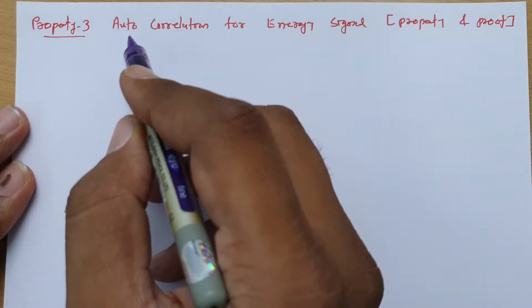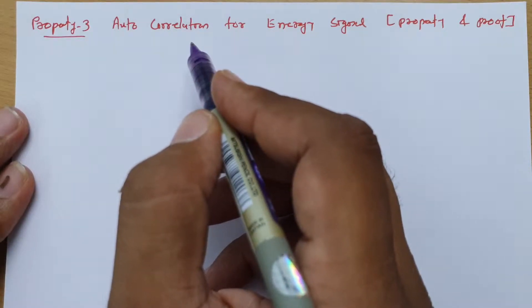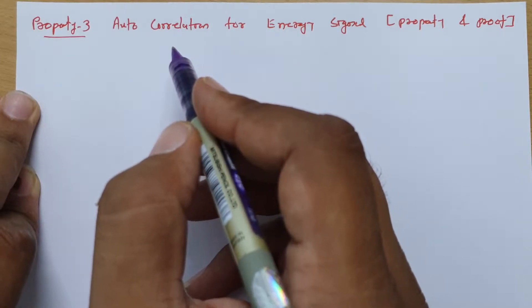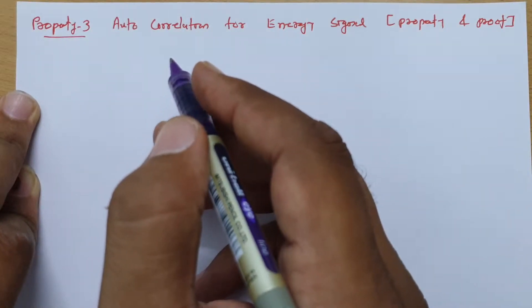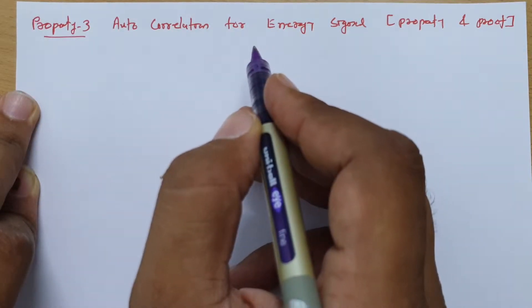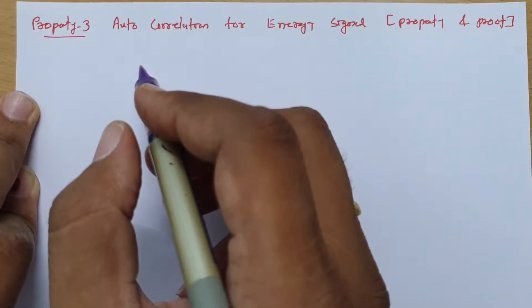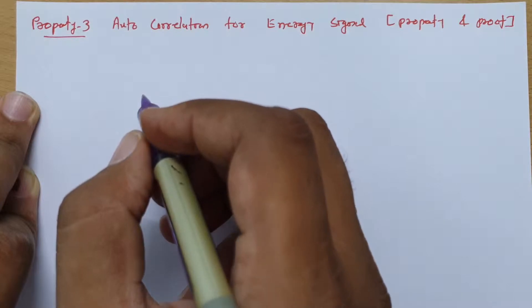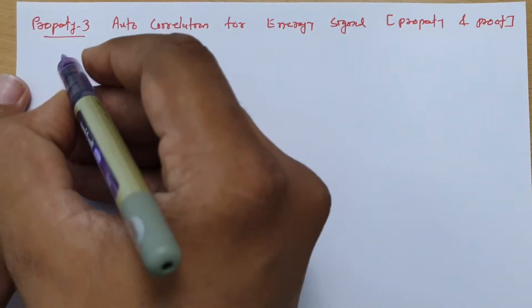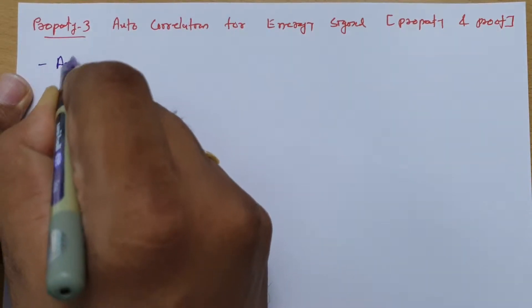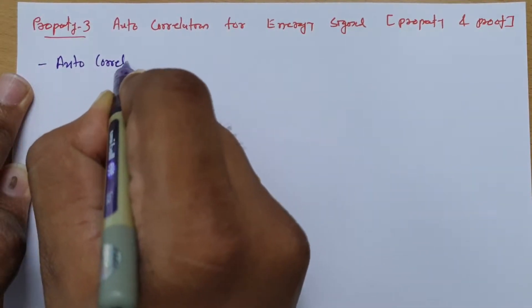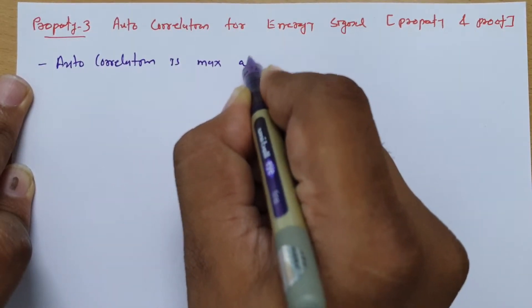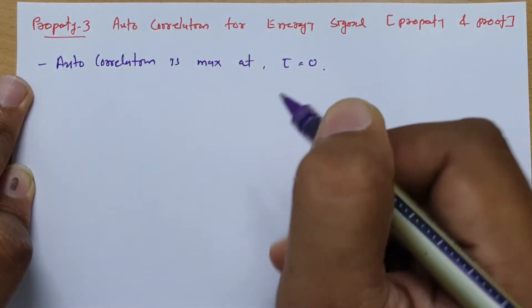The third property states that the autocorrelation function is maximum at tau equals zero. So whenever you calculate the autocorrelation function, at the shifting parameter tau equals zero, it will be maximum. Let me list it here: autocorrelation function is maximum at tau equals zero.